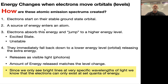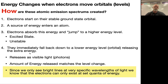Electrons start at their stable ground state orbital — an orbital is just kind of like an energy level for now; we'll get more detail about orbitals later. A source of energy enters the atom, the electron absorbs this energy and jumps to a higher energy level. That puts them in an excited state, which is extremely unstable for them — they don't like being there. So immediately they fall back down to a lower energy level orbital, and they release that energy out. They jump up to absorb, and then they release and fall back.